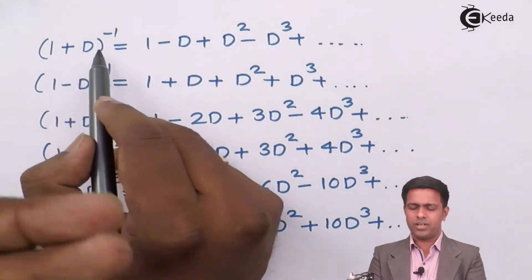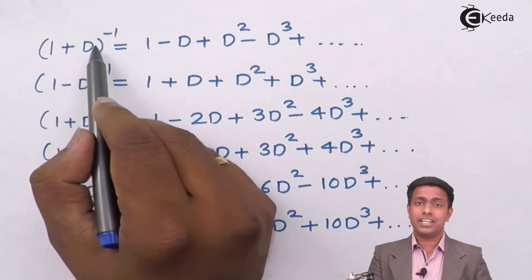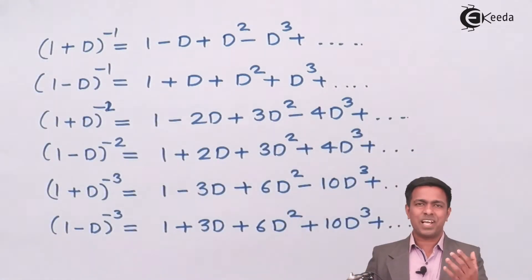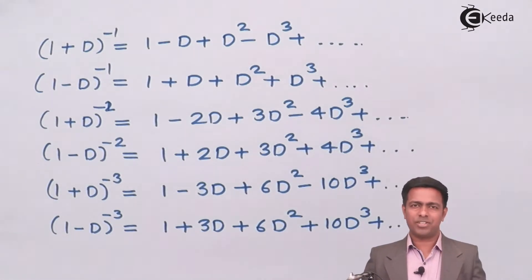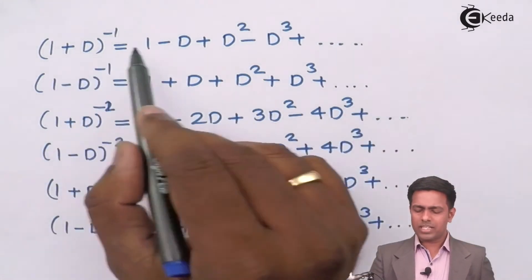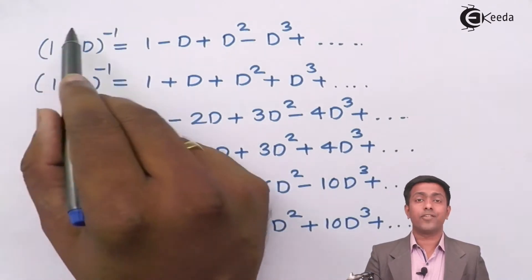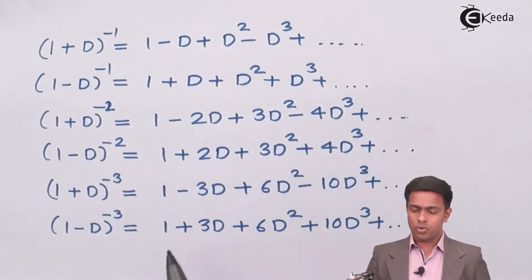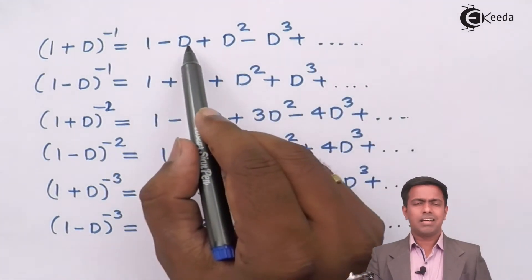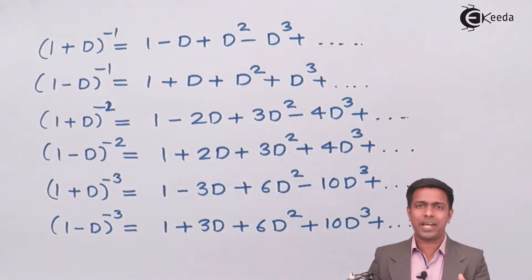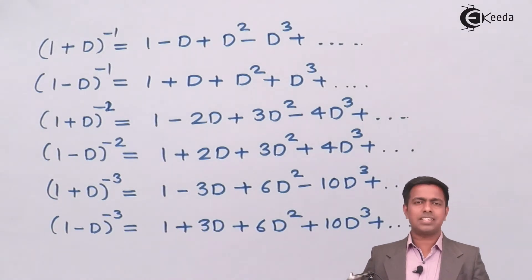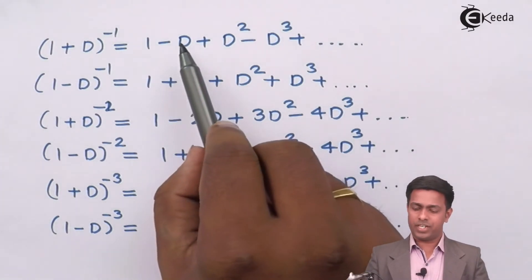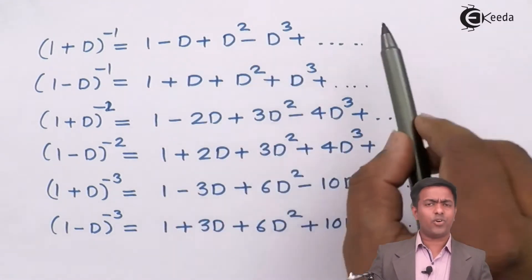When we take it to the numerator it looks like (1 + D) raised to minus 1. To expand this we use the expansion formula from lower semester mathematics. After expanding this bracket, we multiply each term with the polynomial on the right hand side. Remember that D is the operator d/dx, so D means first derivative, D squared means second derivative, D cubed means third derivative, and so on.